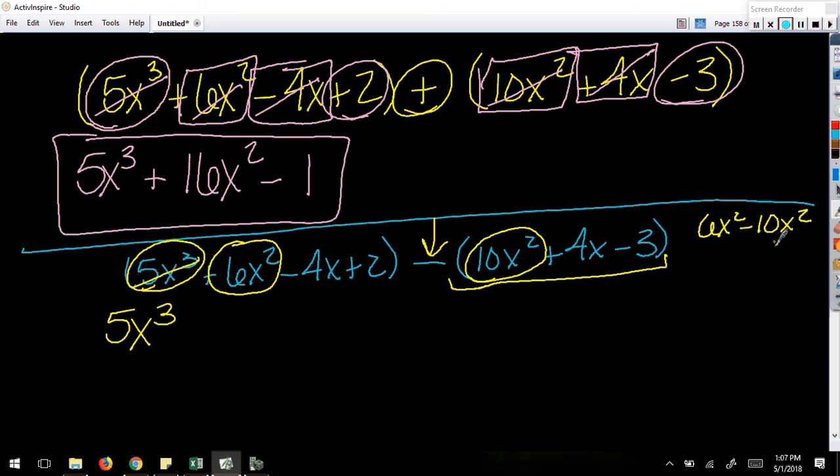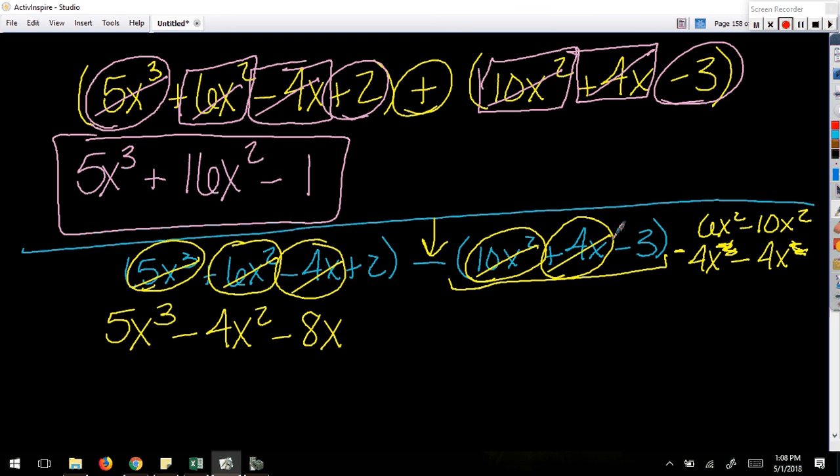Again, I'm done with these two terms. On to the x's, I have -4x and I have positive 4x. Again though, I'm not adding them this time. I'm saying -4x² minus 4x². Well, -4 minus 4 would give me -8. Oh, and I'm sorry, that's not a squared, that's just an x. I do apologize. -8x.